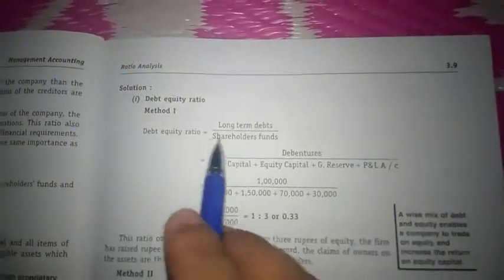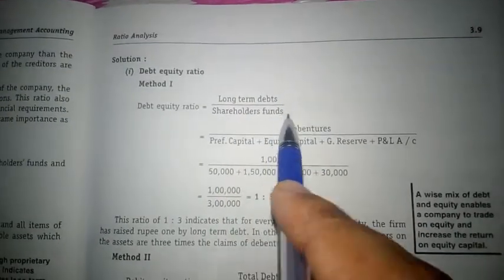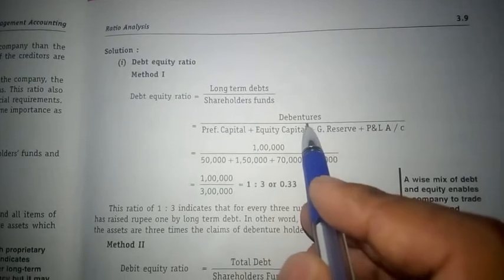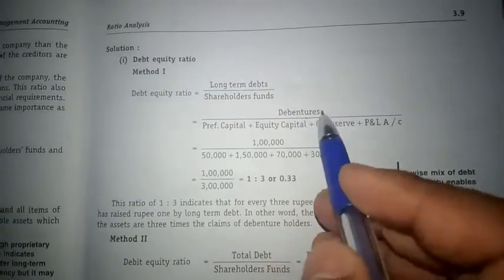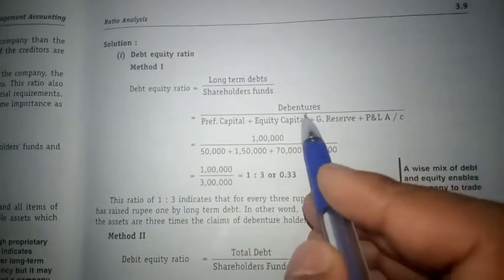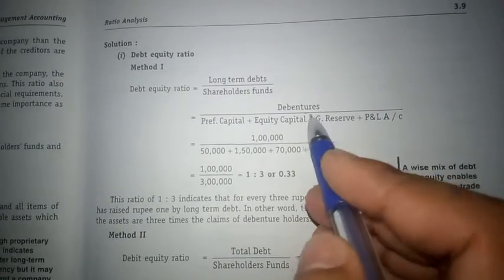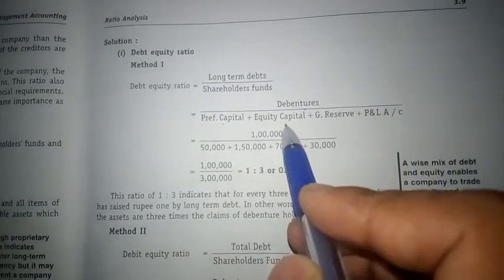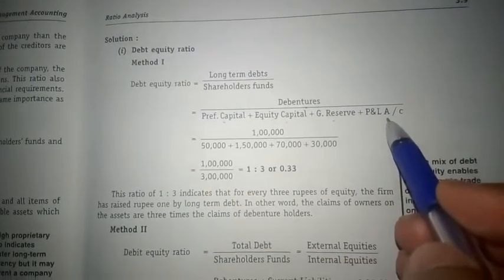To calculate debt equity ratio we require long term debts and shareholders fund. As per this problem the company has only debentures and no other long term loans, so long term debt equals only the value of debentures. Shareholders fund is the total of preferential capital, equity share capital, general reserve, and profit and loss account.